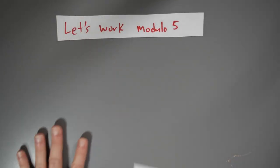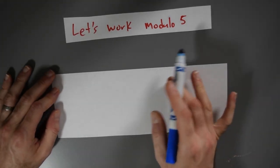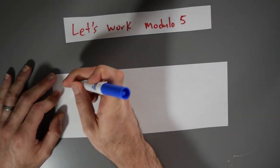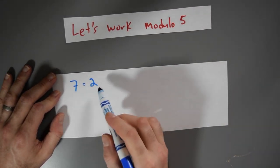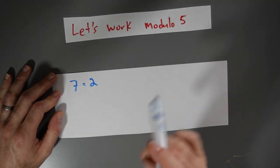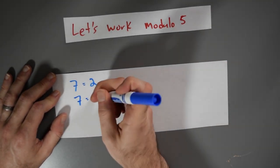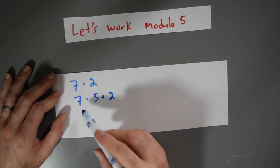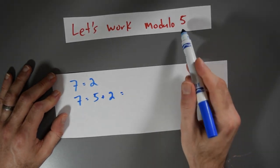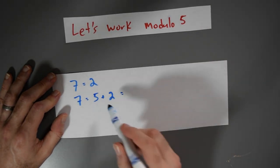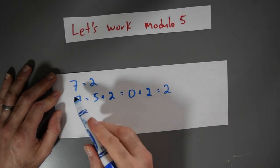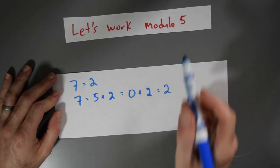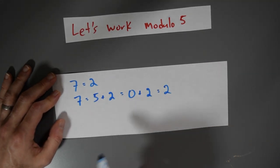Let's work modulo 5. That means we're going to regard 5 as if it's equal to 0. And if we're doing some calculations modulo 5, then I could get away with writing down 7 equals 2, which seems like nonsense. But we're working modulo 5. Well, 7 always means 5 plus 2. But if 5 is equal to 0, then 5 plus 2 is the same thing as 0 plus 2, which is just 2. So 7 is the same thing as 2 modulo 5, once I regard 5 as being the same thing as 0.